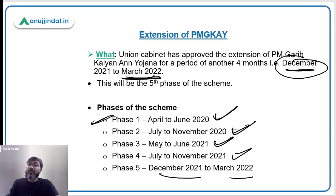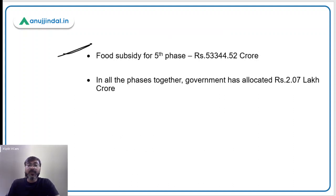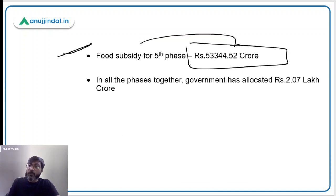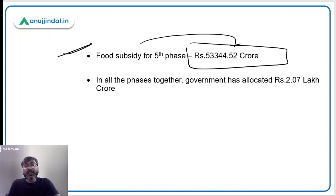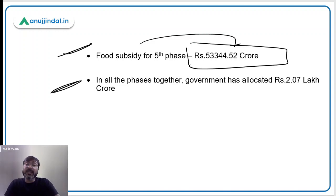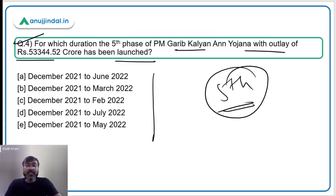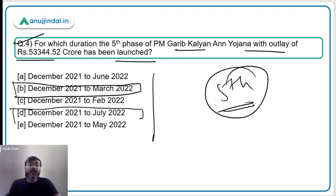The total expenditure of the government for Phase 5 will be Rs. 53,344.52 crore. Across all phases combined, the government has allocated approximately Rs. 2.07 lakh crore. Therefore, the correct answer is December 2021 to March 2022 — Option B.